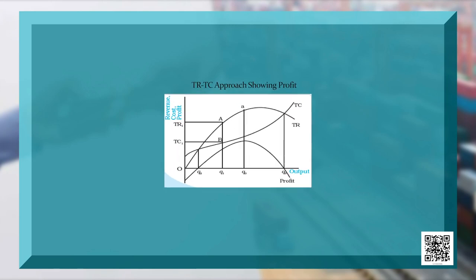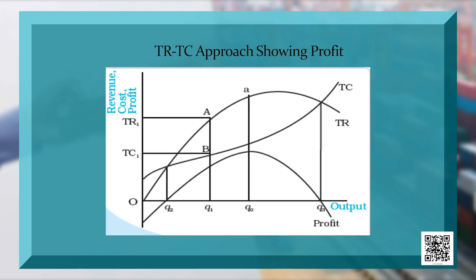Now the different approaches of producer equilibrium. The first one is the TR-TC approach. TR stands for Total Revenue and TC stands for Total Cost. Profit is the difference between Total Revenue and Total Cost. From point O (origin) to point Q2, there is a loss because total cost is greater than total revenue, meaning the firm is incurring more cost in production than it is gaining from the sale of that output.